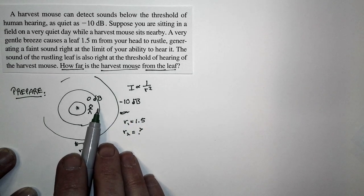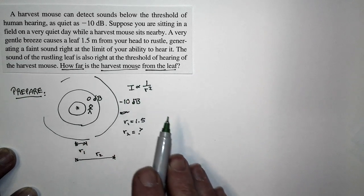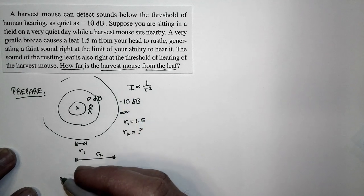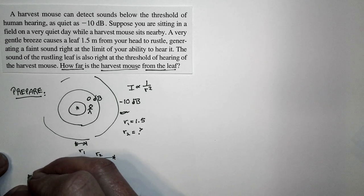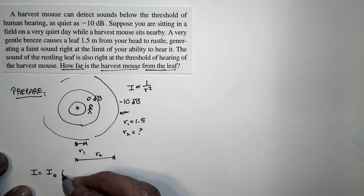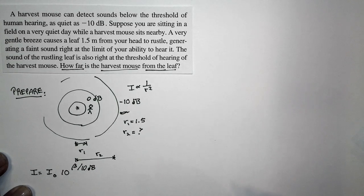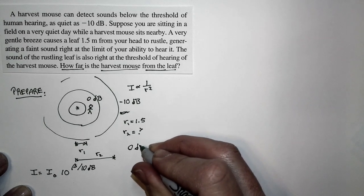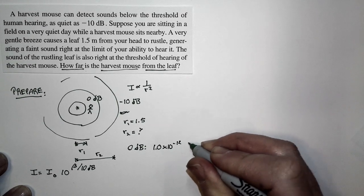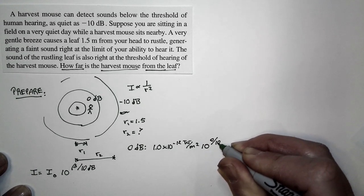We're going to have to convert those decibel values to intensities, because the question of how the sound changes as it travels is a question of intensity, not sound intensity level. So let's take these numbers and convert them to intensity using this relationship: the intensity equals the smallest intensity you can hear times 10 to the power of beta over 10 decibels, where beta is the sound intensity level. So zero decibels corresponds to I₀, which is 1.0×10⁻¹² watts per square meter, times 10 to the 0 over 10 decibels.